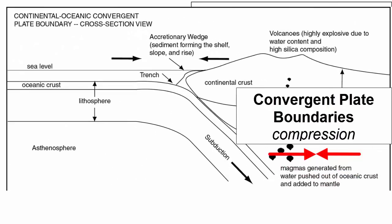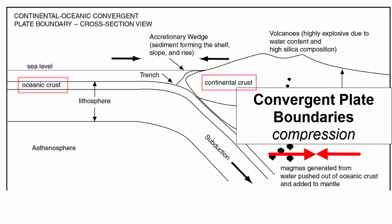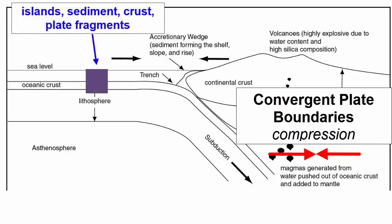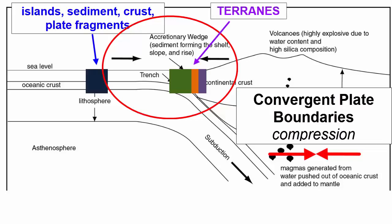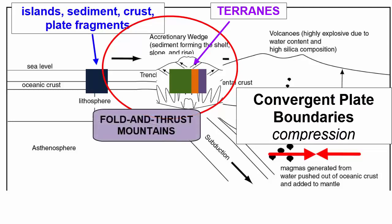When the leading edge of one converging plate consists of oceanic crust and the other continental crust, the plate with the ocean crust subducts or sinks beneath the plate with the continental crust because ocean plate is denser. Material atop the subducting plate, such as islands, sediment, or the crust itself, can get scraped off and accreted to the edge of the continental plate in the zone between the trench and the volcanic arc. These accreted elements called terrains are squeezed up against the continent, which gets thicker here, with folds at depth and faults at the surface. The faults that form from compression are called reverse faults, or if very low angle, thrust faults — hence the name fold and thrust mountains.